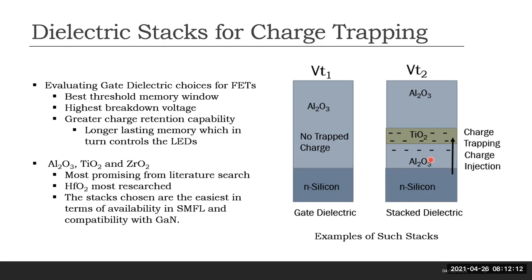I chose alumina, titania, and zirconia for this experiment as they seemed the most promising in the literature search I conducted, though they have not been as researched as hafnia. They were also chosen because the chemistries in the recipes were available readily on our ALD tool and seemed most compatible with GaN.